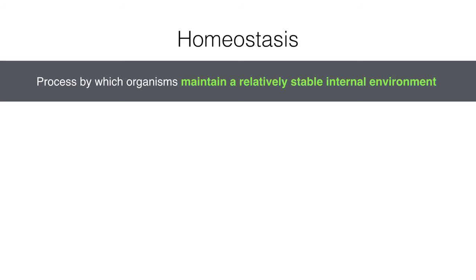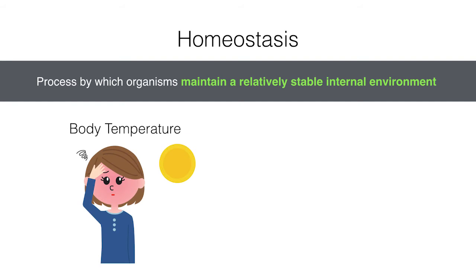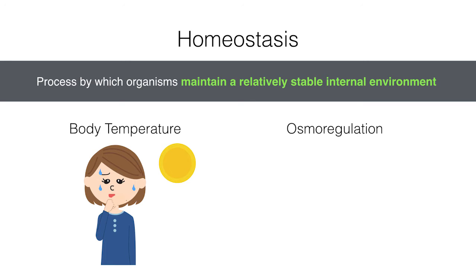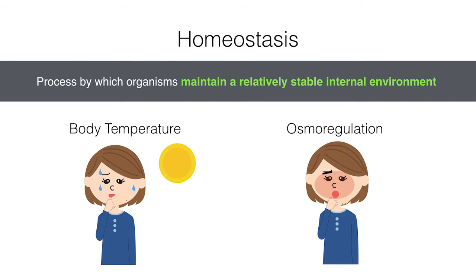Flashing back to the previous video tutorial, we demonstrated that homeostasis is the process by which organisms maintain a relatively stable internal environment. The two examples we looked at include body temperature — where if your body temperature increases due to the hot external environment, homeostasis will work to cool it down and vice versa — and water levels in the body, or osmoregulation, where if you're experiencing low water levels, your kidneys reabsorb more water to increase water levels and vice versa.